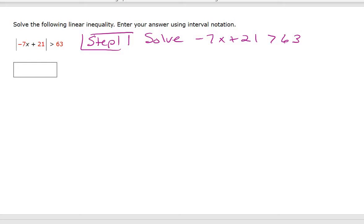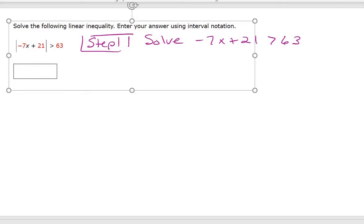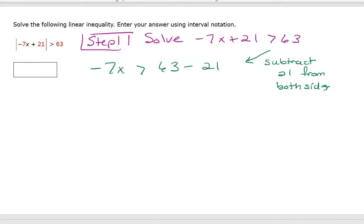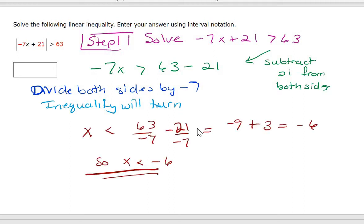In case you forgot, here's what we do. Just like this was an equal sign here, we subtract the 21 from both sides. And then here's the difference: I have to divide both sides by negative seven to get rid of this coefficient. But when I do, because it's negative, the inequality is going to turn around. So the inequality went from this direction to this direction.